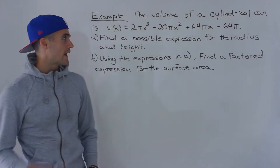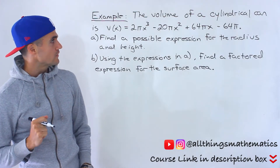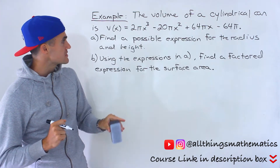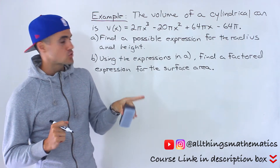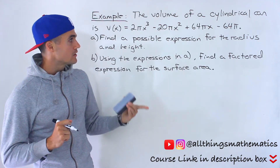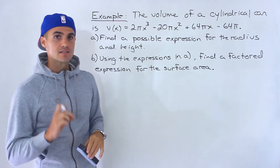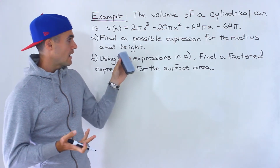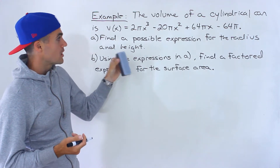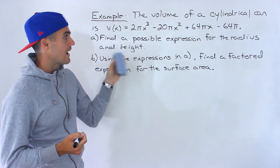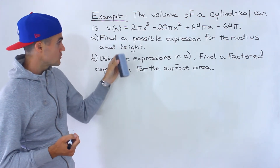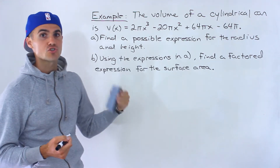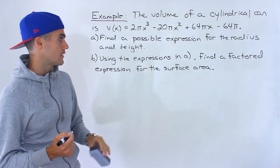Welcome back. In this next question we're told that the volume of a cylindrical can is given with this expression: v(x) = 2πx³ - 20πx² + 64πx - 64π. We have two questions to answer: find a possible expression for the radius and height, and then using those expressions find a factored expression for the surface area of the can.